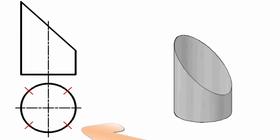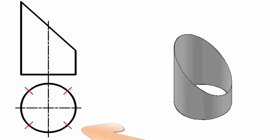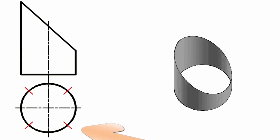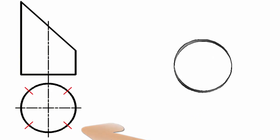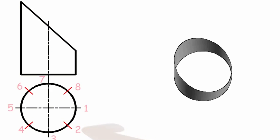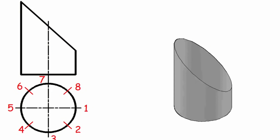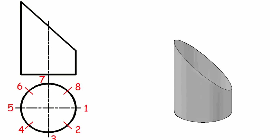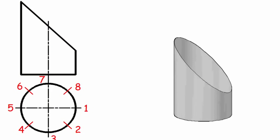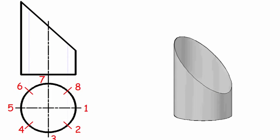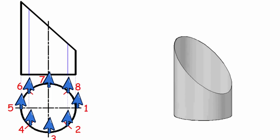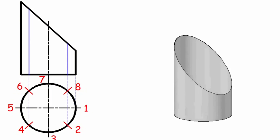We divide the perimeter of the pipe into 8 equal shares. It is also possible to increase the number of these parts in order to get the template more accurately. Then we draw vertically straight lines from the marked points on the perimeter.